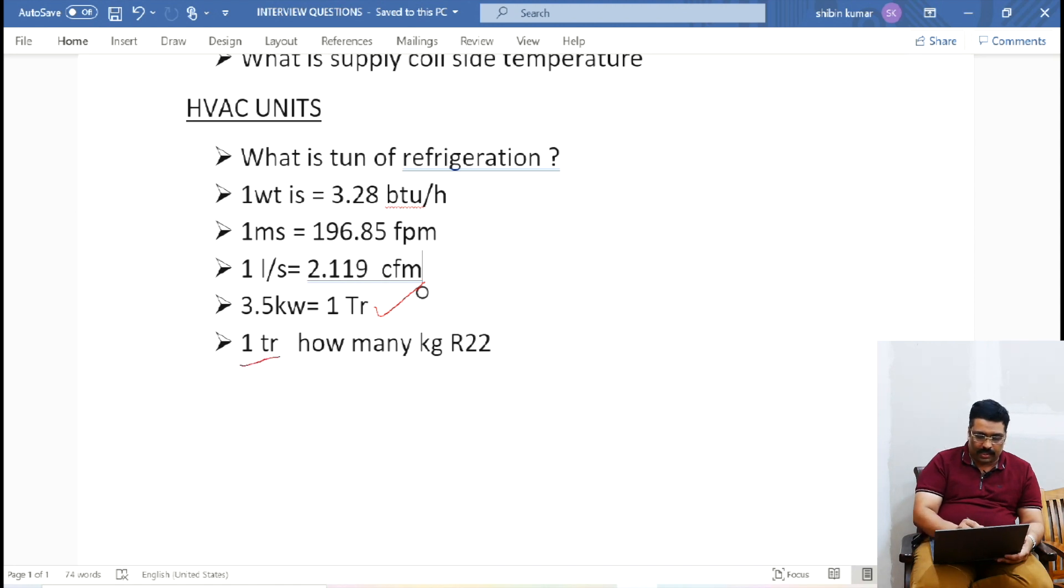One TR is how many kg of R22? One TR AC - for example you have an AC, one TR - now R22 is no more there because R410, R420, something like this grade. R410 is commonly used for refrigeration because there is some eco-friendly system going on in refrigeration.